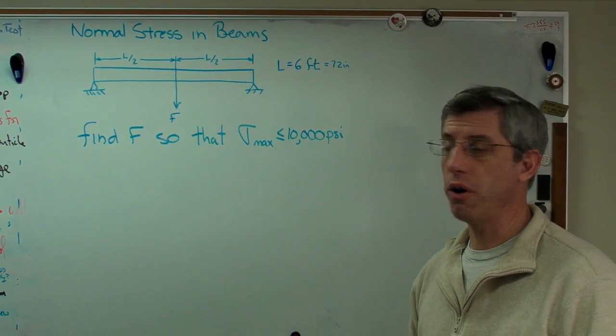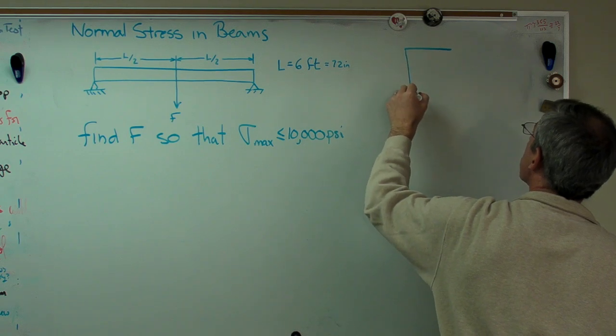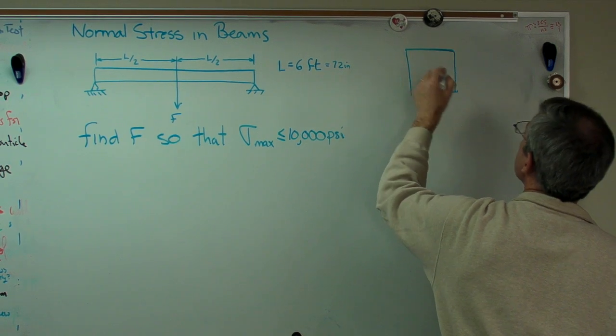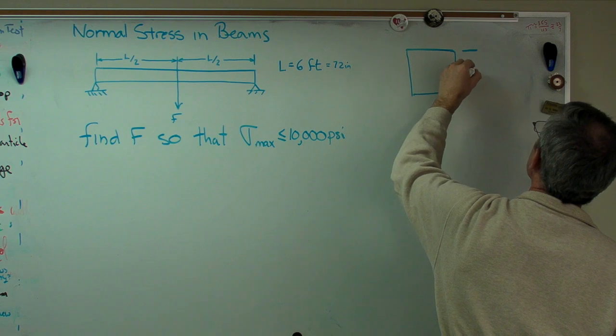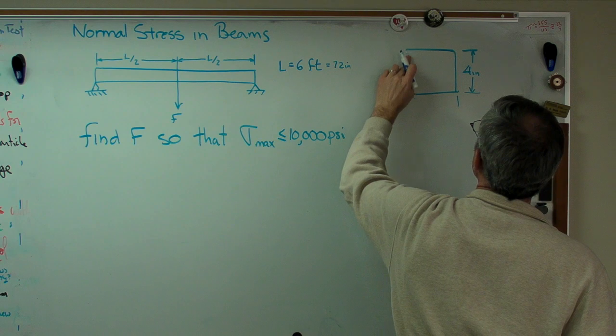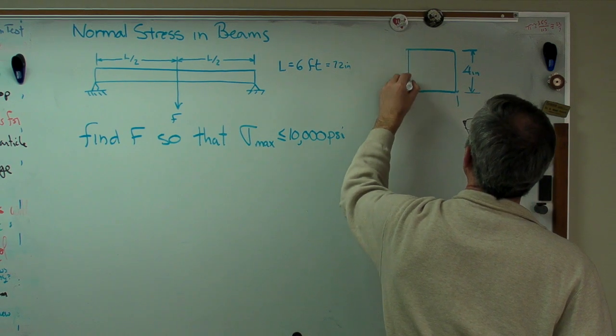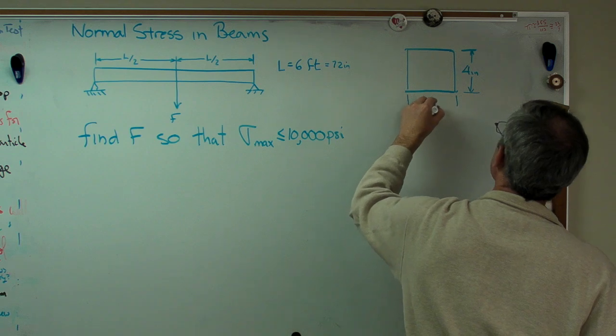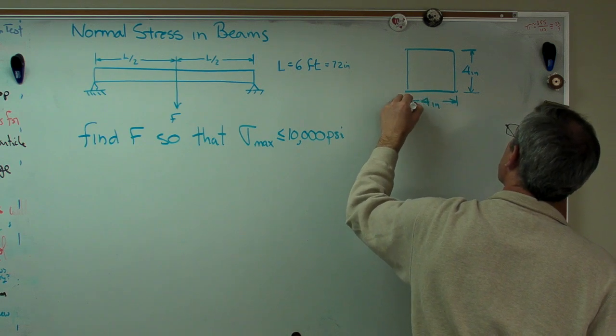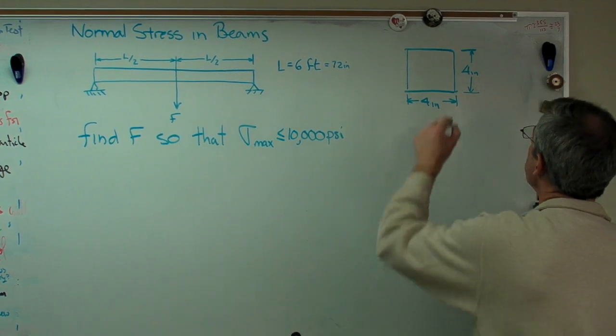In order to do this we're going to need a cross section. The cross section is going to look like this. It's four inches. Let me straighten this out here. There, four inches. And four inches is pretty close to 100 millimeters. It's about 102 millimeters.